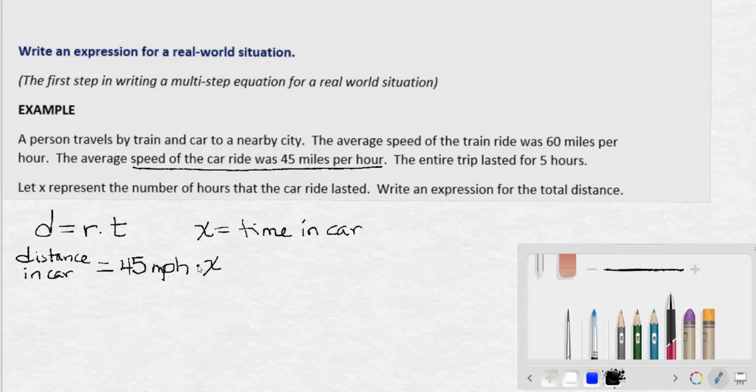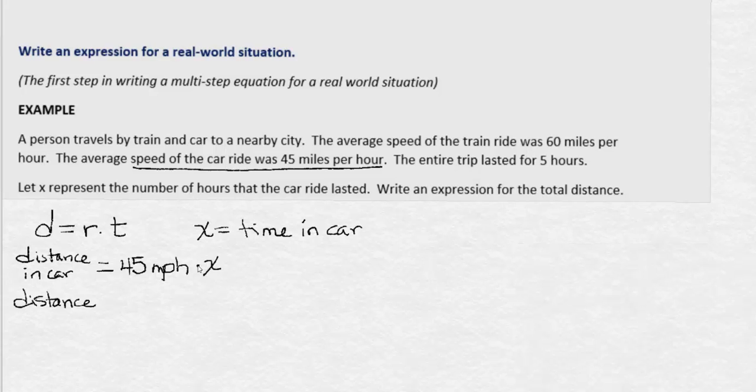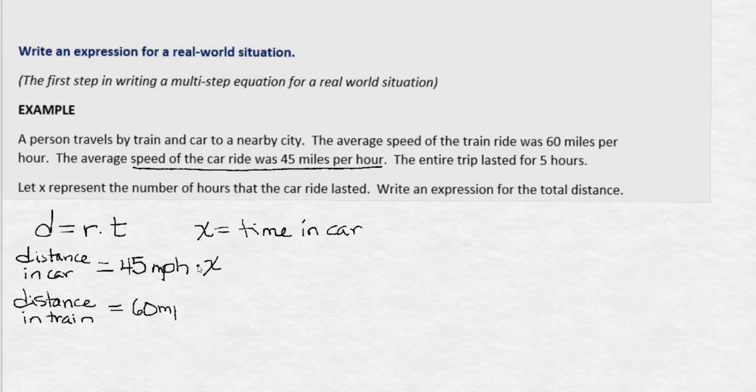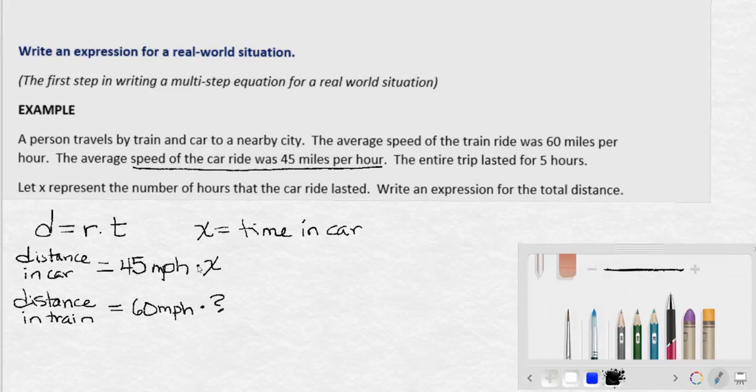Now let's talk about writing an expression for the distance traveled in the train. Since the average speed of the train ride was 60 mph, the rate is 60. Now, this is the tricky part.